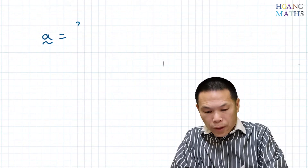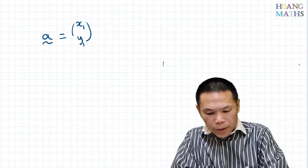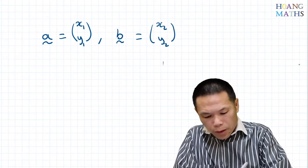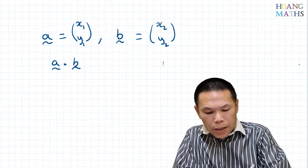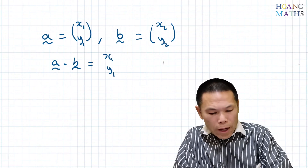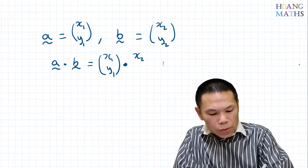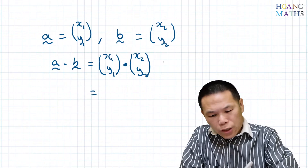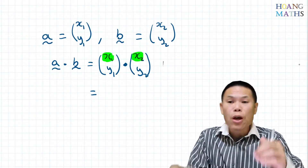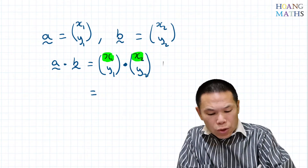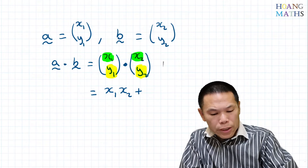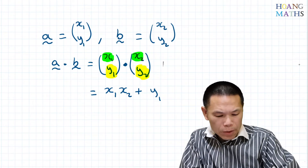Let's say we have two vectors. Let's say vector A is equal to x1, y1, and vector B is equal to x2, y2. So vector A dot vector B, that is x1, y1 dot x2, y2. To work out the dot product, for the i component we just multiply them together, so that is x1 times x2. And we add the product of the j component, so that is y1 times y2.